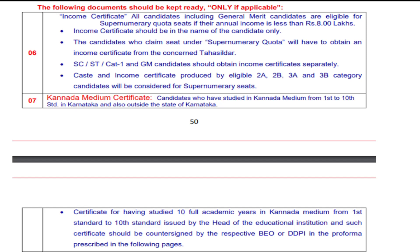The first conditional document is the income certificate. All candidates, including general merit candidates, are eligible for the Supernumerary Quota (SNQ). For SNQ, you only need an income certificate — caste is not mandatory. The eligibility criterion is that your family's annual income should be less than 8 lakhs. If your parents' combined annual income is below 8 lakhs, you can fall under the SNQ quota, provided you also have a good rank and good marks. The income certificate should be in the name of the candidate only, not the parents', sisters', brothers', or other family members' names.